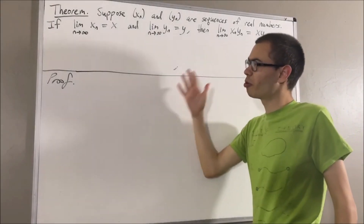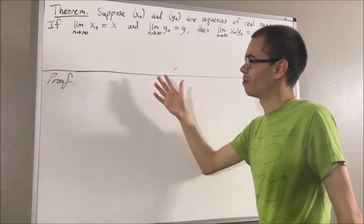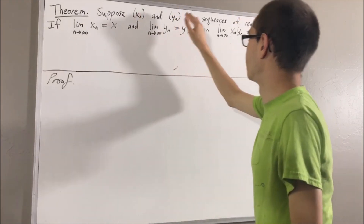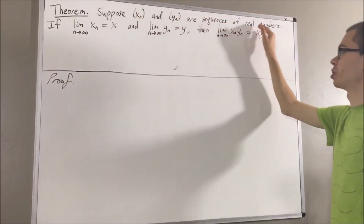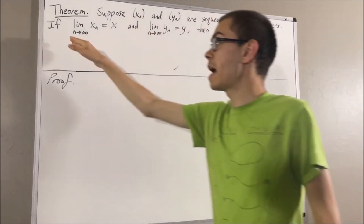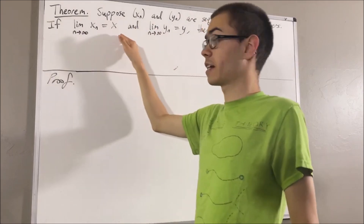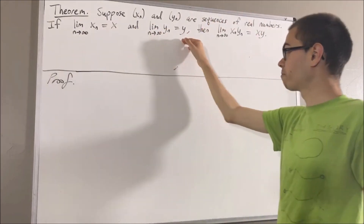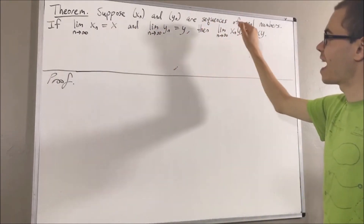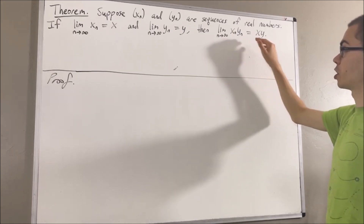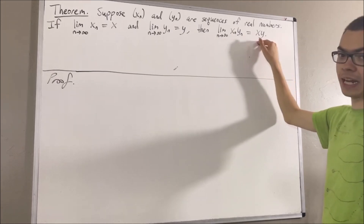In this video, we are going to prove the following theorem. Suppose xn and yn are sequences of real numbers. If xn converges to x and yn converges to y, then xn times yn converges to x times y.